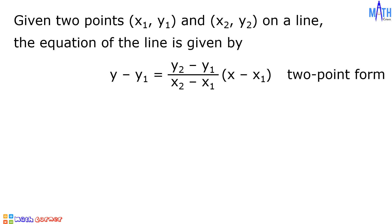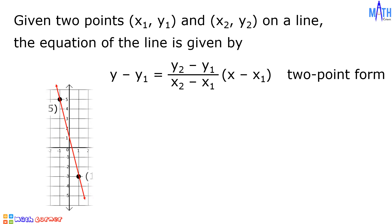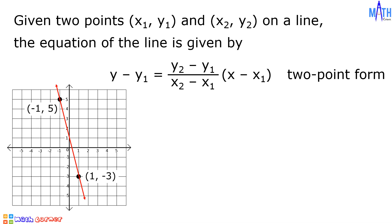Let us have some examples. Let us find the equation of the line passing through these two points: negative 1, 5 and 1, negative 3.